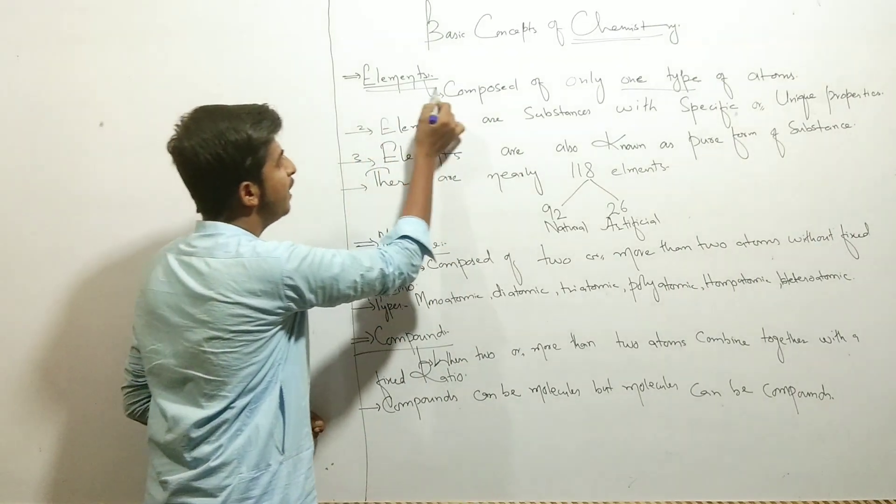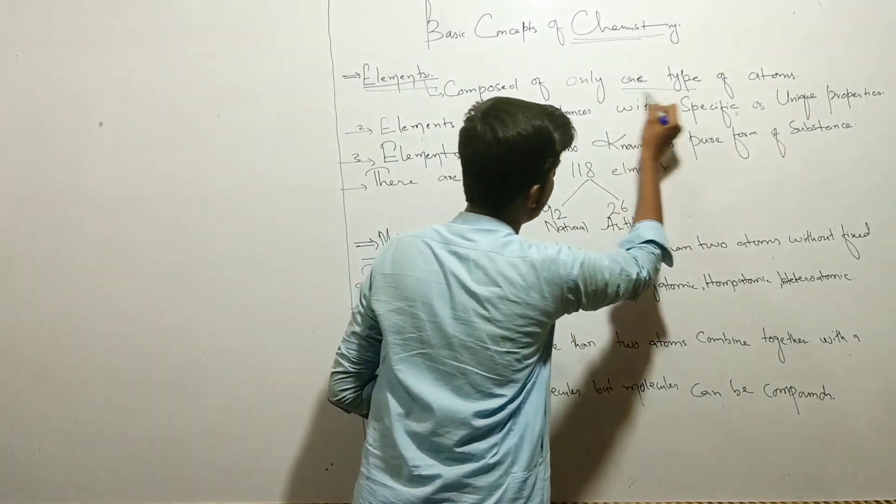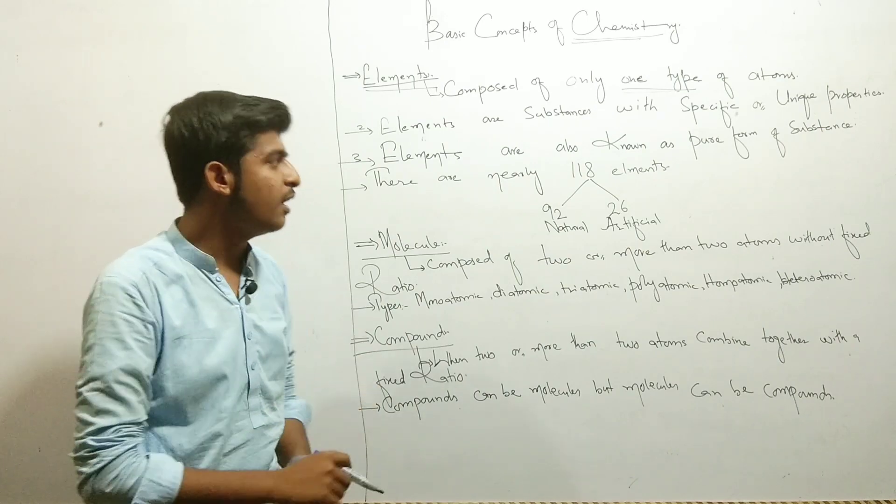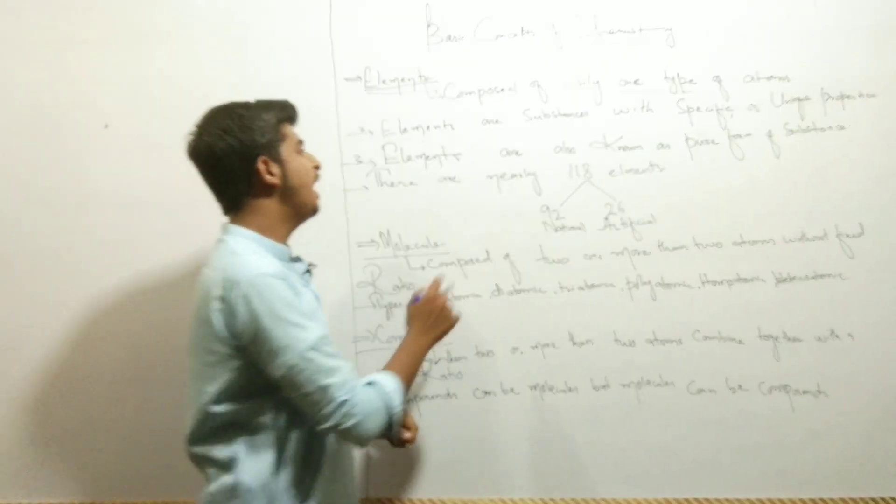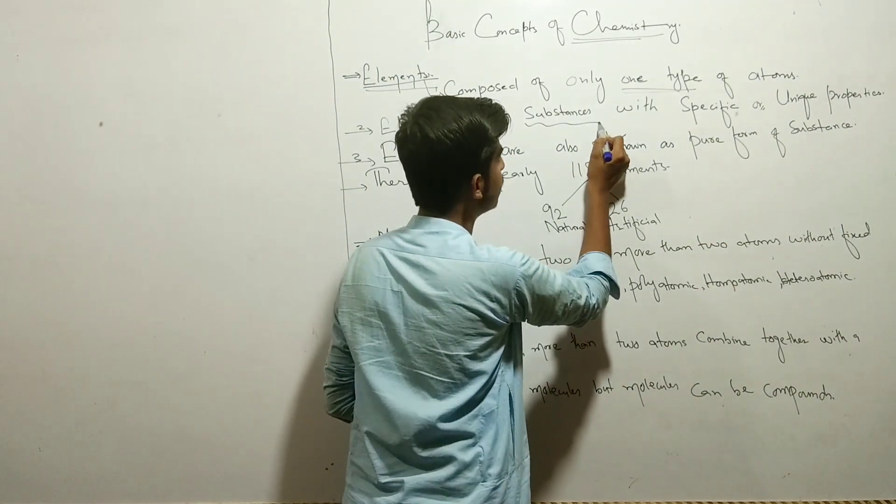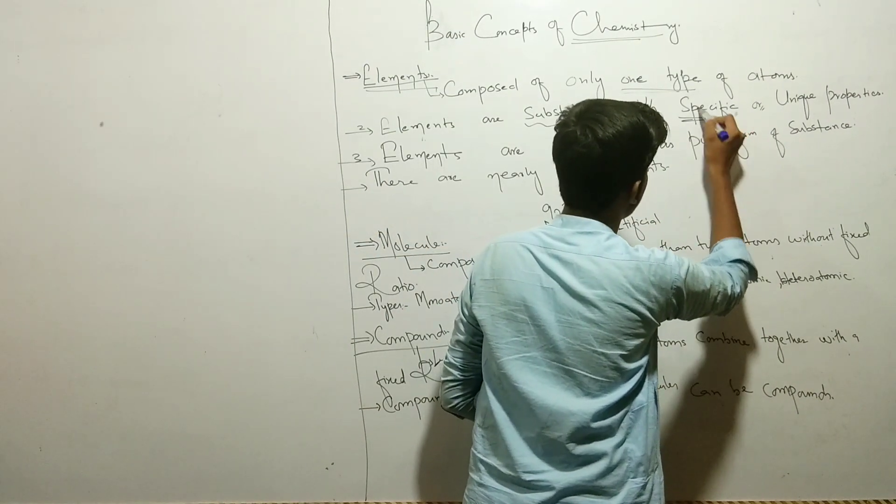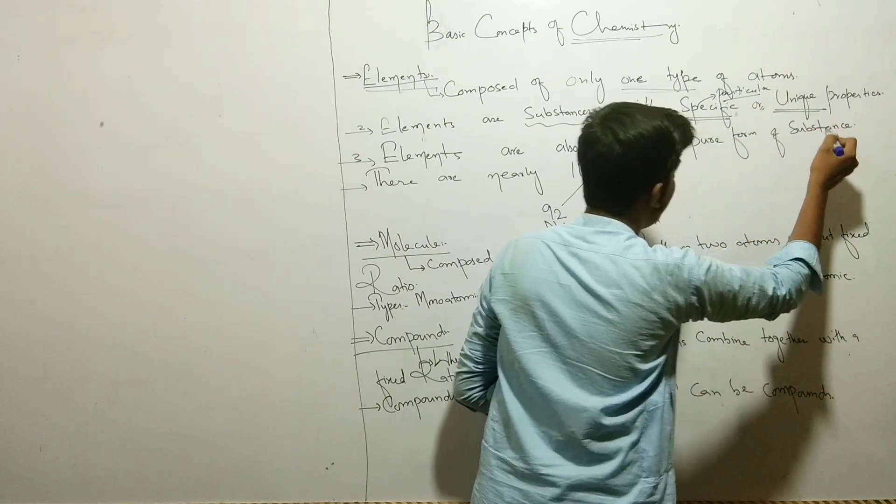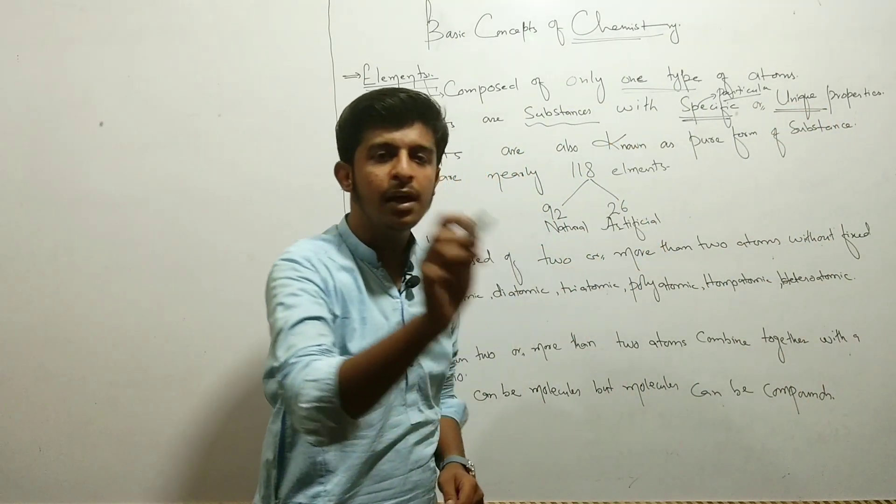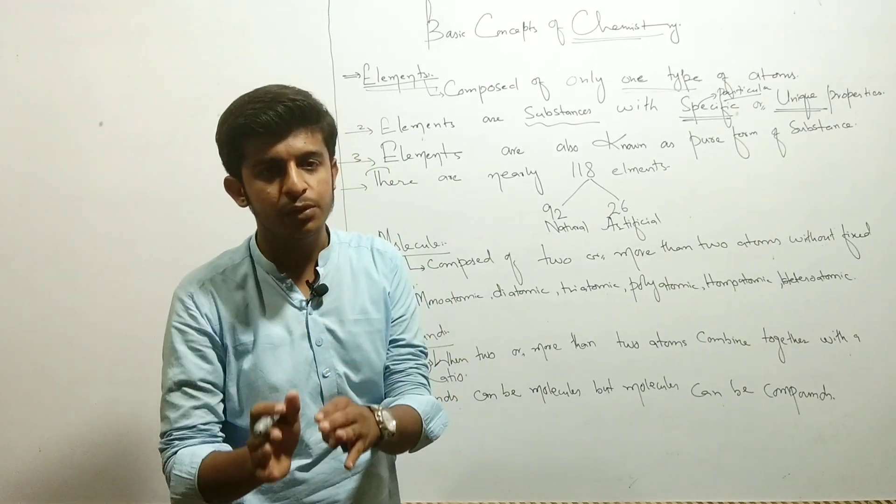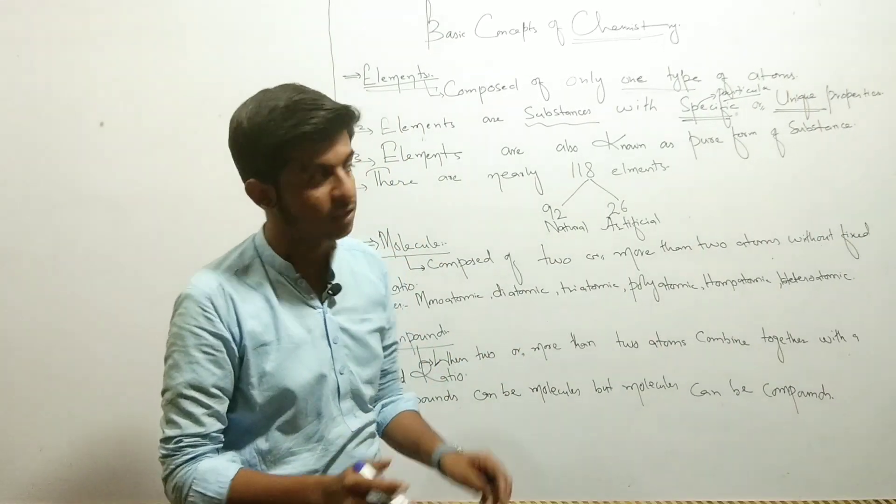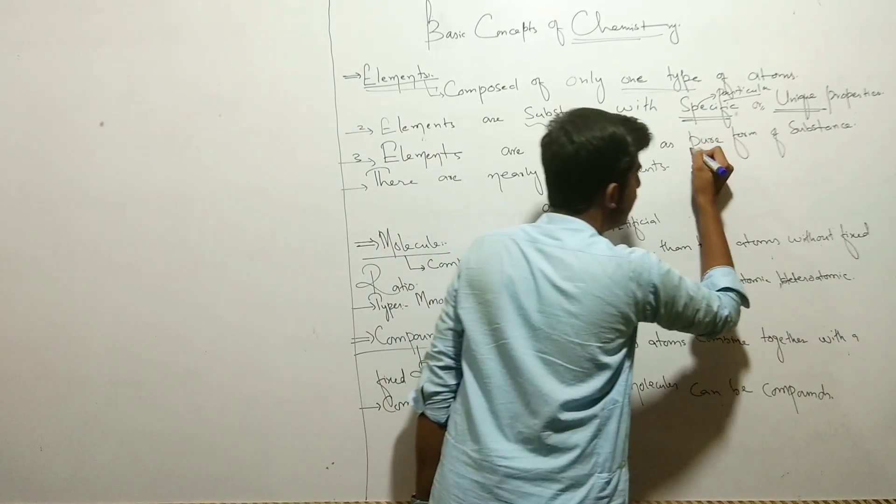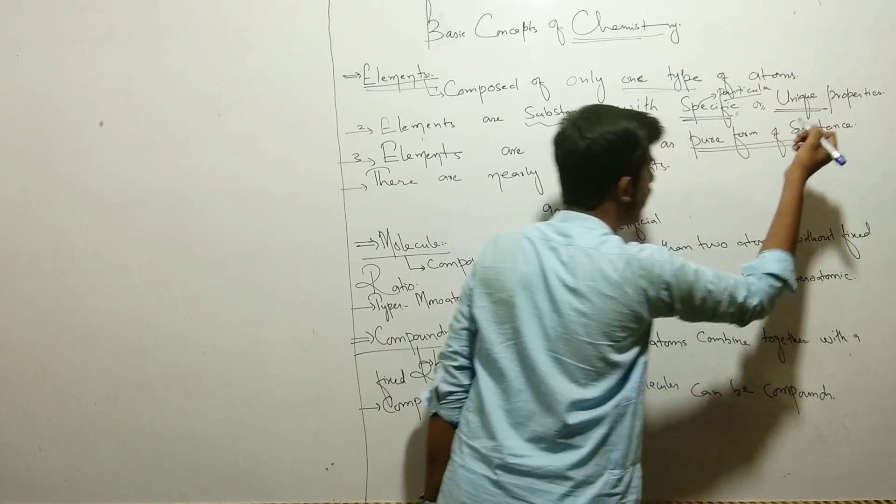The second topic is elements. Elements are composed of only one type of atom. Elements are only single atom. And the second definition is elements are substances with particular properties, unique properties. Elements of other substances can't replace their properties. They have a unique property. Elements are also known as pure form of the substance.